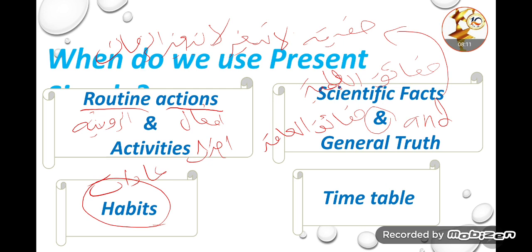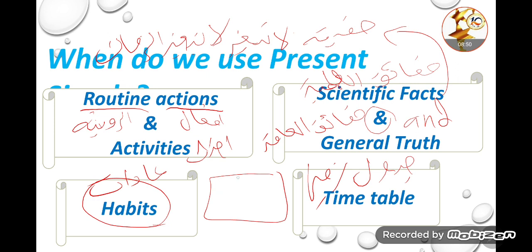The last main use is timetable. When I have a timetable or fixed schedule, I use Present Simple. For example: the supermarket opens in the morning and closes in the evening. There are also other usages of Present Simple, but these are the main four. I want to add a fifth one: when you want to talk about yourself — to express yourself — you also use Present Simple.